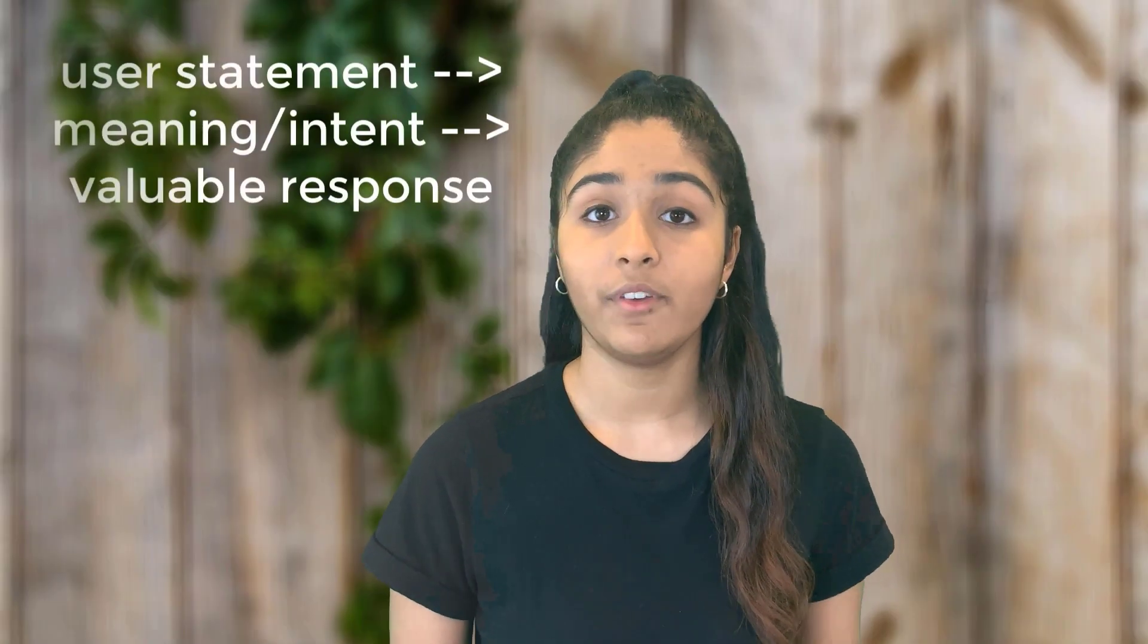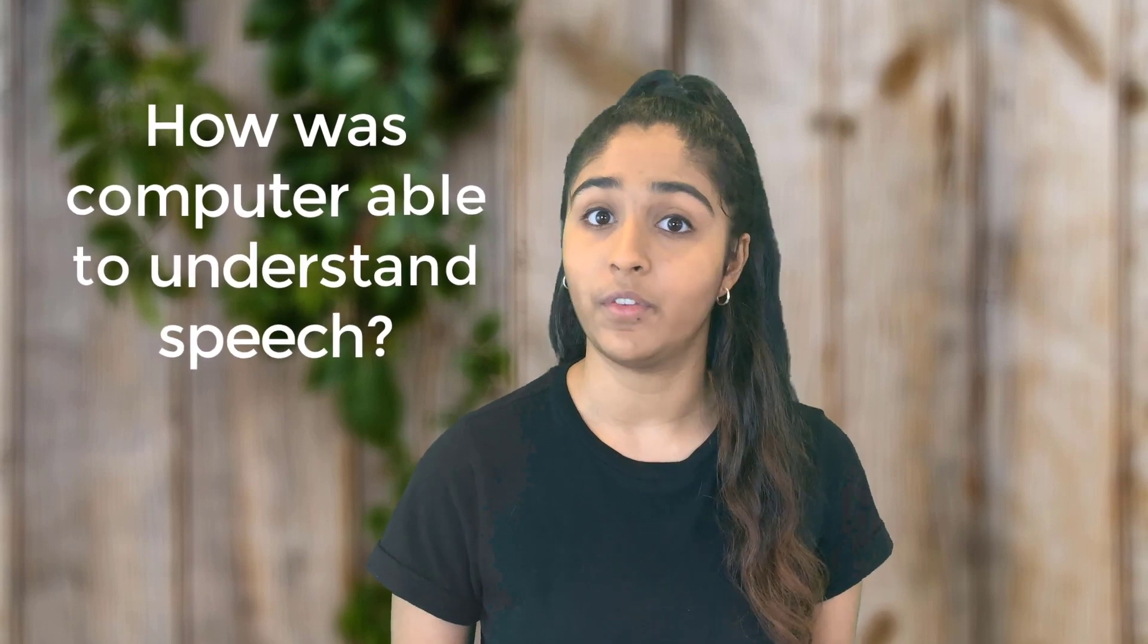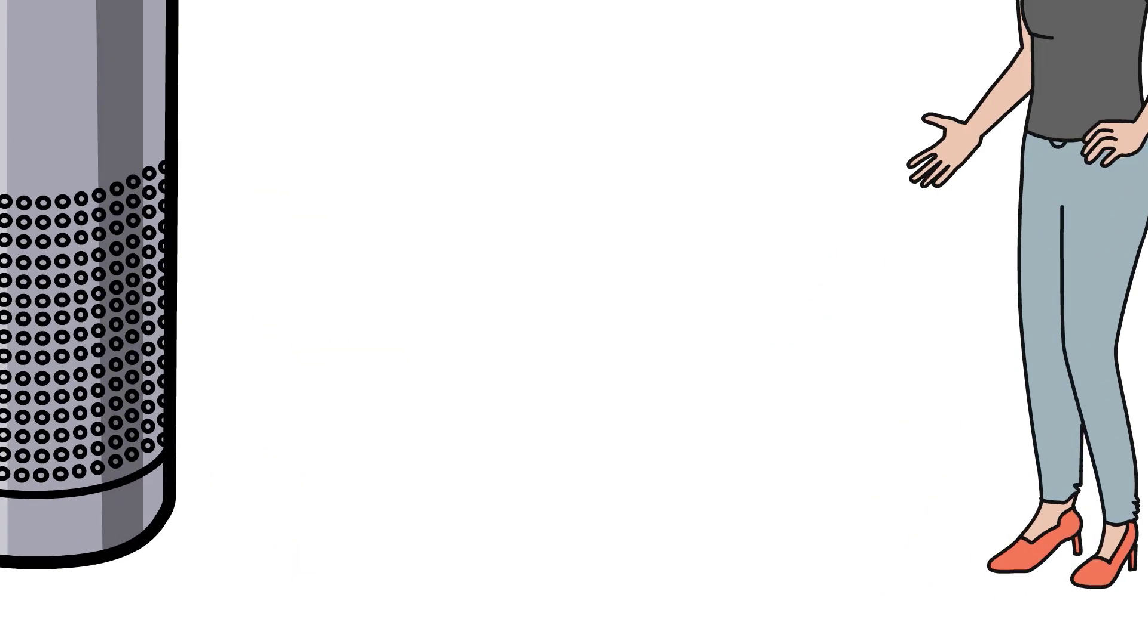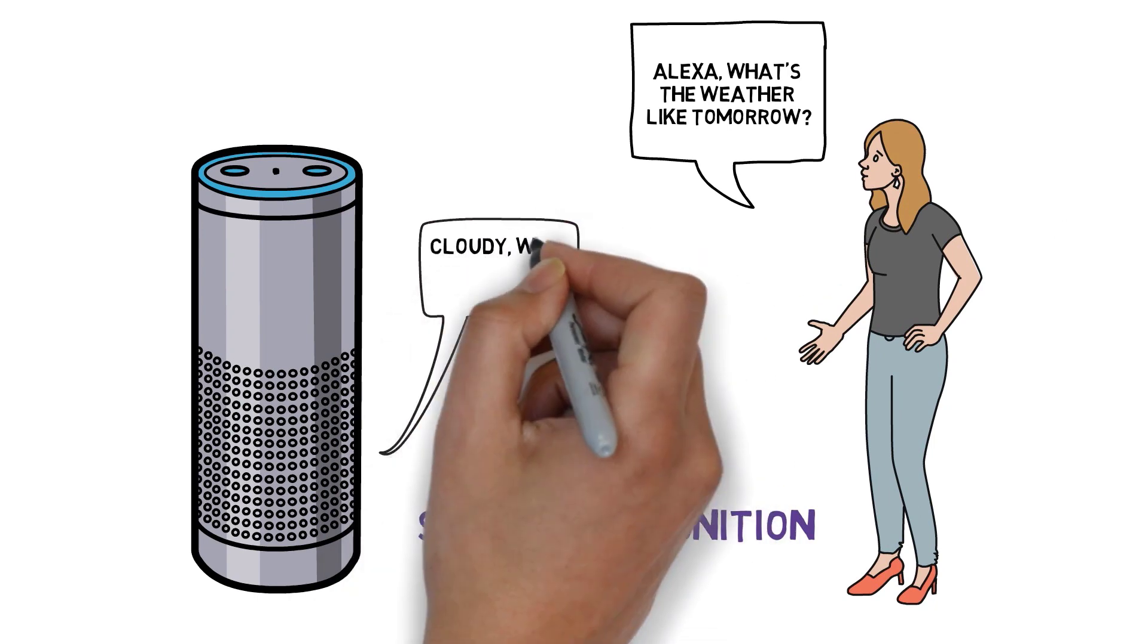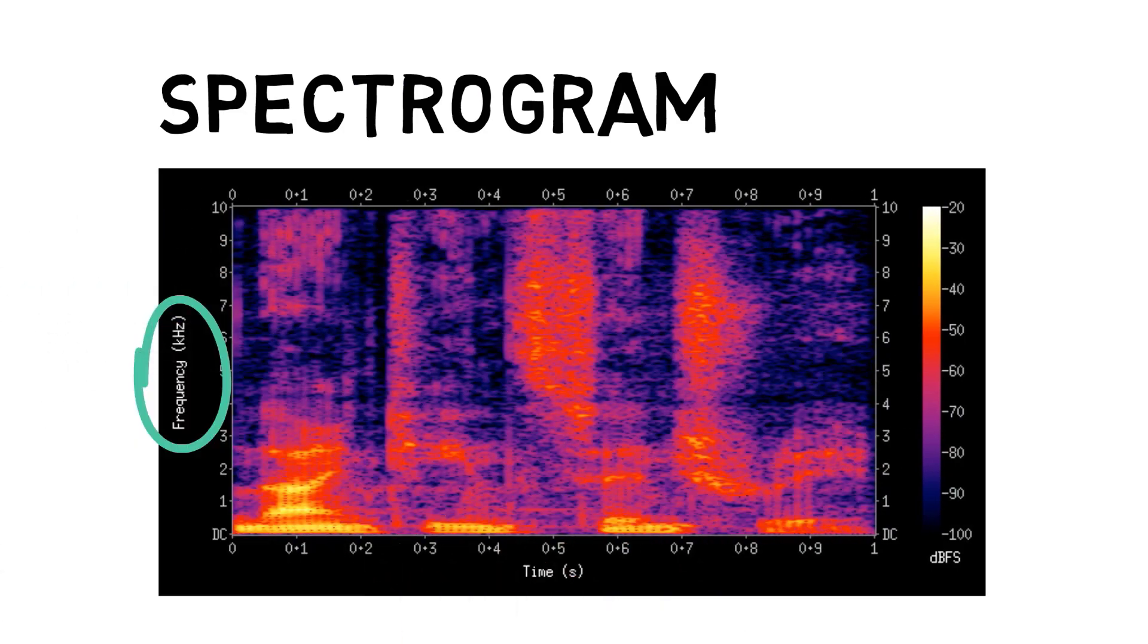Now, we know that in the case of text input, NLP enabled the machine to take in a statement, figure out its meaning, and respond back with valuable output. But in the case where the input was voice, how was the computer able to understand the sounds coming out of the person's mouth? I mean, humans can hear words and understand the meaning and intent of those words. But how does a computer know how to put different vowel and consonant sounds together to form complete words and sentences in our human language? Well, that takes us to our next branch, speech recognition, that allows the computer to do just this.